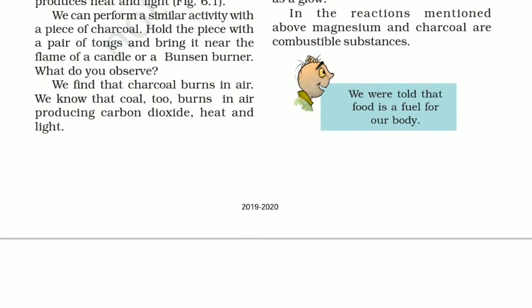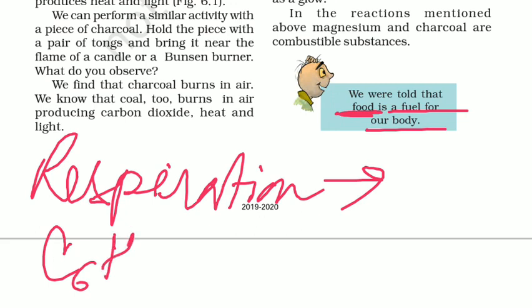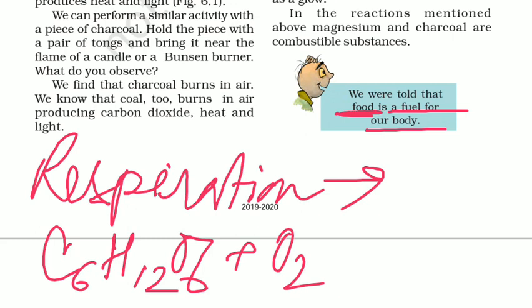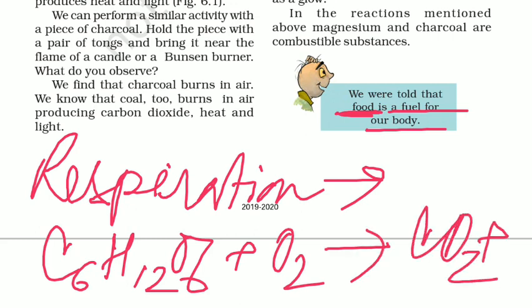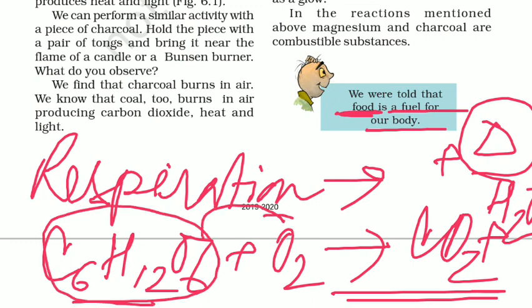Our body also uses food as fuel. The food we eat works as fuel in our body. You are already familiar with the term respiration from class 7. In respiration, the food we eat — that is glucose, C₆H₁₂O₆ — when it reacts with oxygen, it produces carbon dioxide, water, and energy. This complete process is known as respiration, and our body uses that heat energy to do many kinds of work.